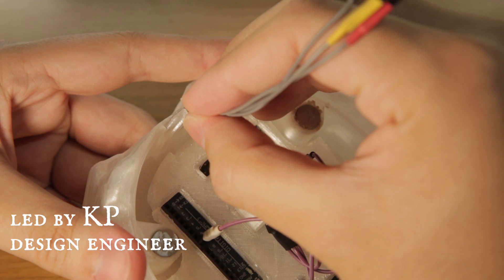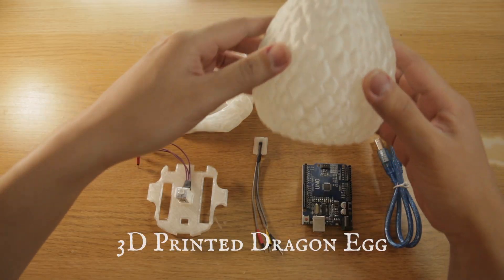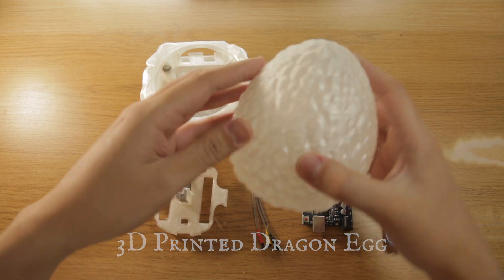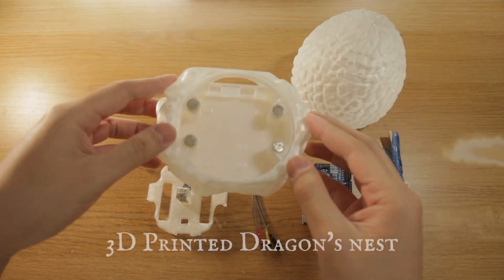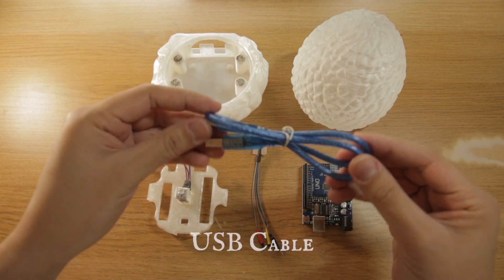Let's first start off by going over what's included in the kit. We've got the egg itself here, it's pretty nice. This is the base, we've got the four magnets here. USB cable for later.